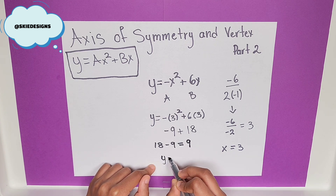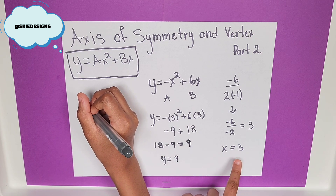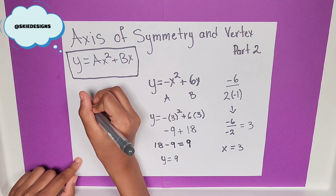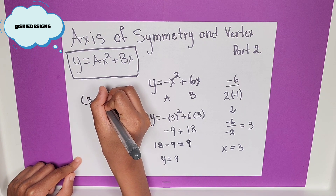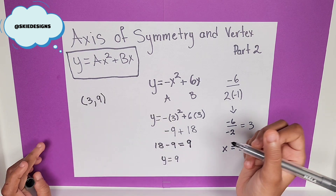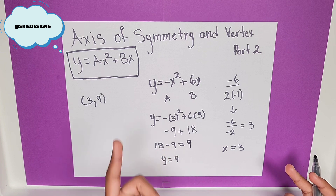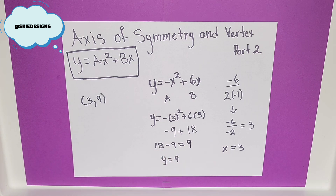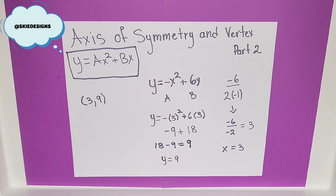Now, we know that y is equal to 9. So, let's quickly just rewrite this. Our Axis of Symmetry is x is equal to 3. Our Vertex is h and k, or x and y, which means 3 and 9. It doesn't really make much of a difference — even though we don't have the c, we are still able to solve for the Axis of Symmetry and the Vertex. However, we still have one more possibility: what happens if we don't have b? Stay tuned for the next video where I'm going to explain how we solve it if we don't have bx and we only have x squared and c. Thank you for watching, and I hope you guys learned how to solve this equation.